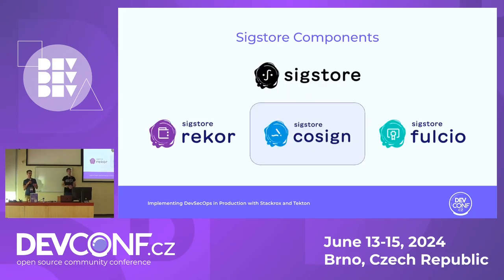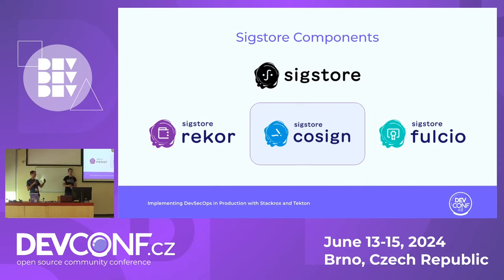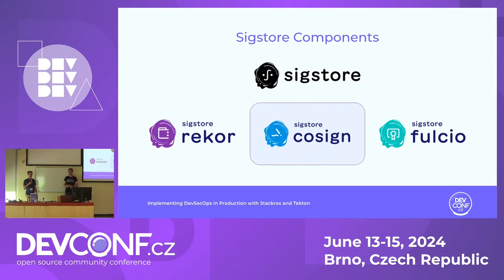Sigstore consists of basically three components. There is Rekor, which is a transparency log — essentially a Merkle tree where all hashes are stored and available for everyone to look up, making it validatable. There is Fulcio, which is a private PKI to create signing certificates for developers. And today, we will focus on Cosign, which is a tool to sign container images and to validate afterwards that the image is by the author we expect it to be.